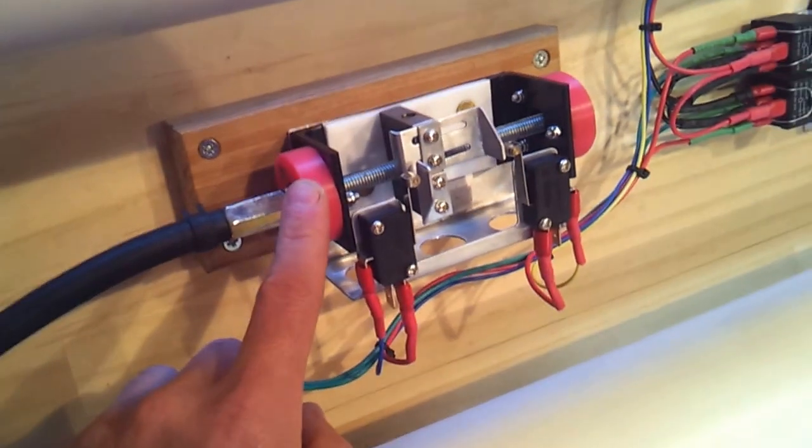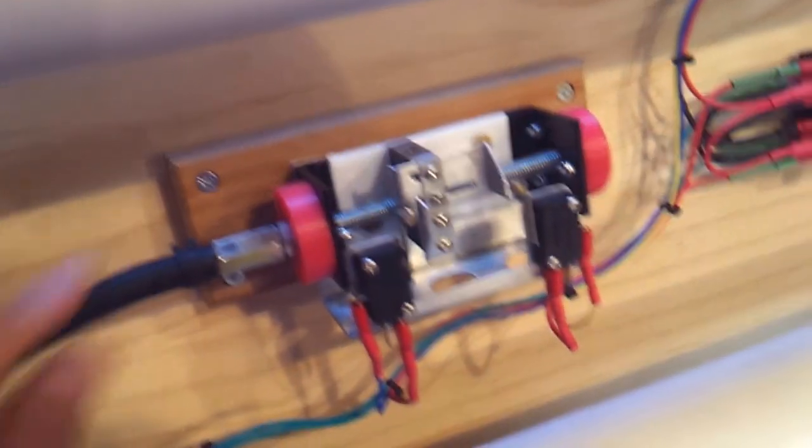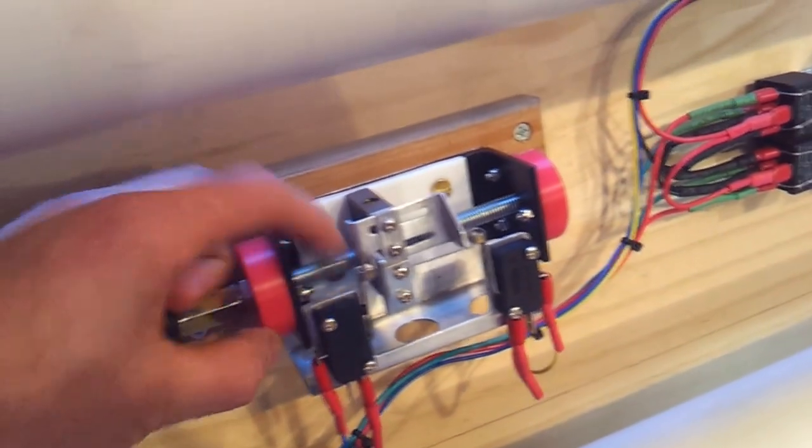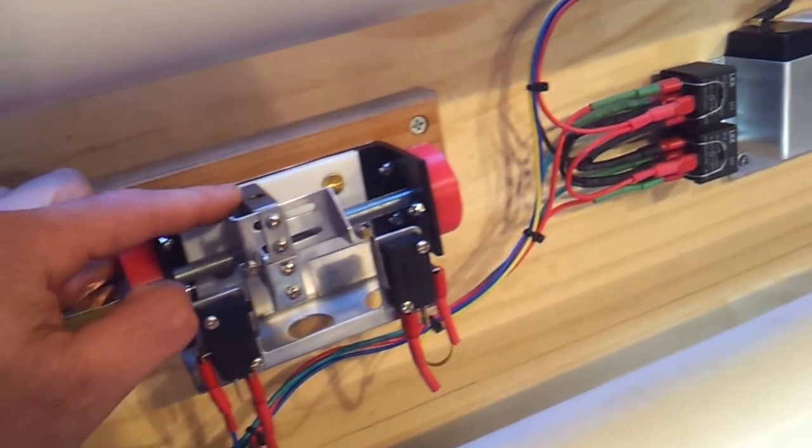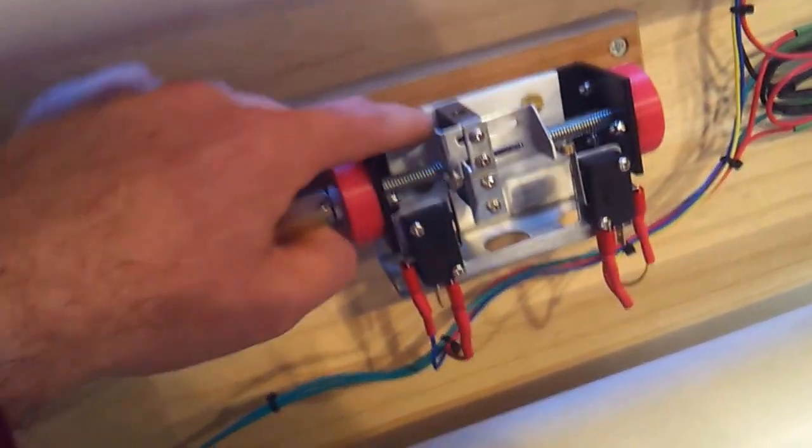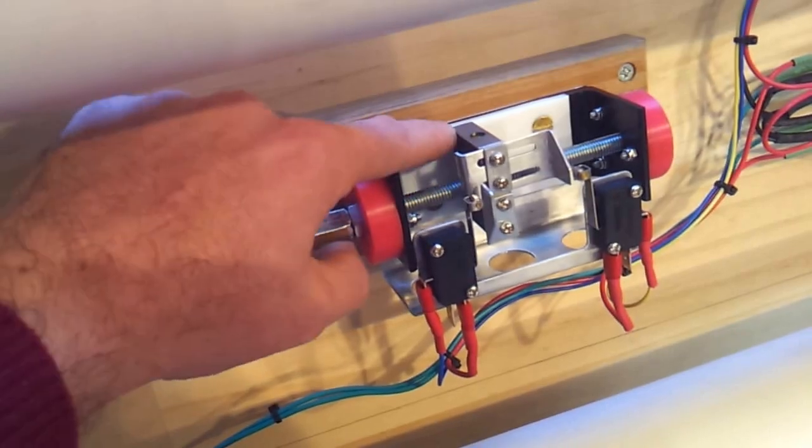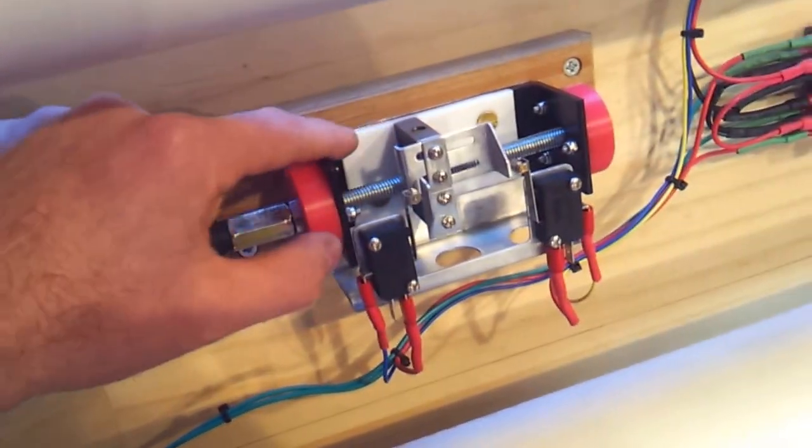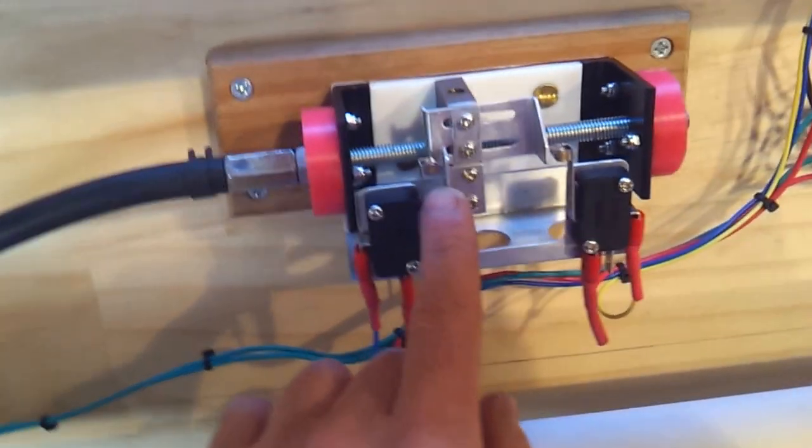Now this is a limit switch unit. Basically the drive drives this threaded rod which is running in two bearings, and it pushes this captive block backwards and forwards. It's actually sliding on this white stuff which is a piece of PTFE, which is Teflon, just to give it a nice frictionless surface.